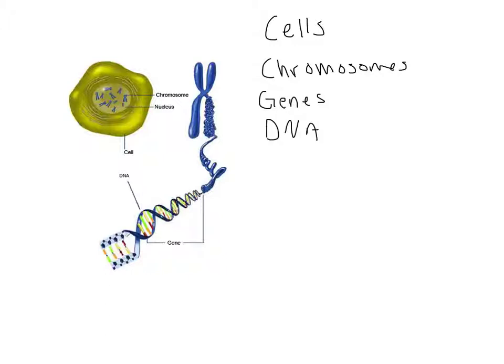Our cells — here's a picture of a cell — are what our body is made out of. Everything in your body is made of cells. They make up your bones, your tissues, your hair, your skin, everything. And what the cells are constantly doing is, as they get older and worn out, they reproduce themselves, so we're constantly making new cells.